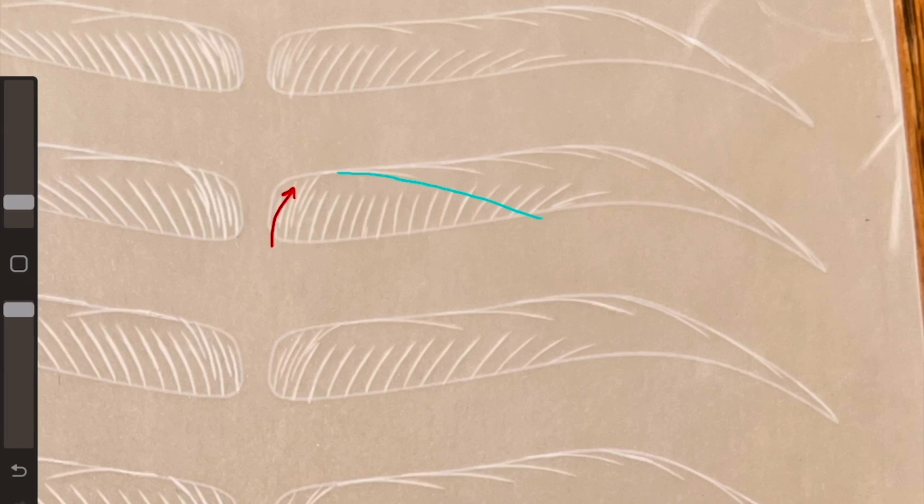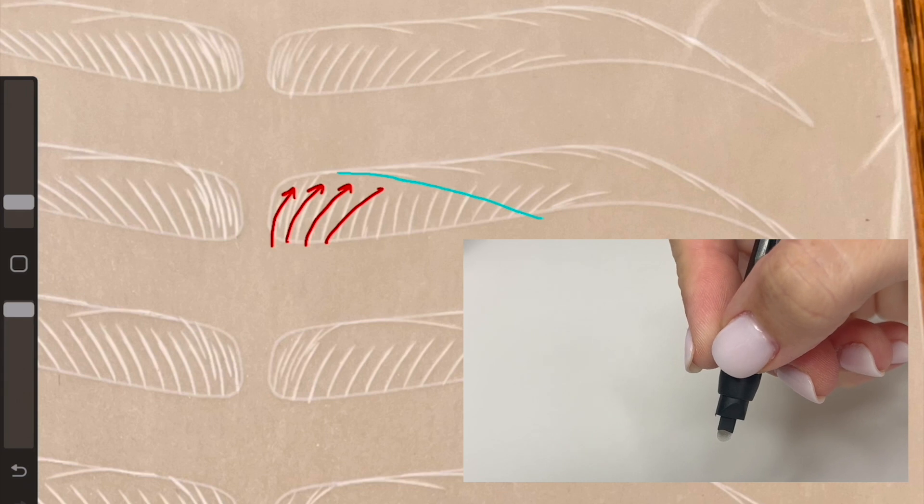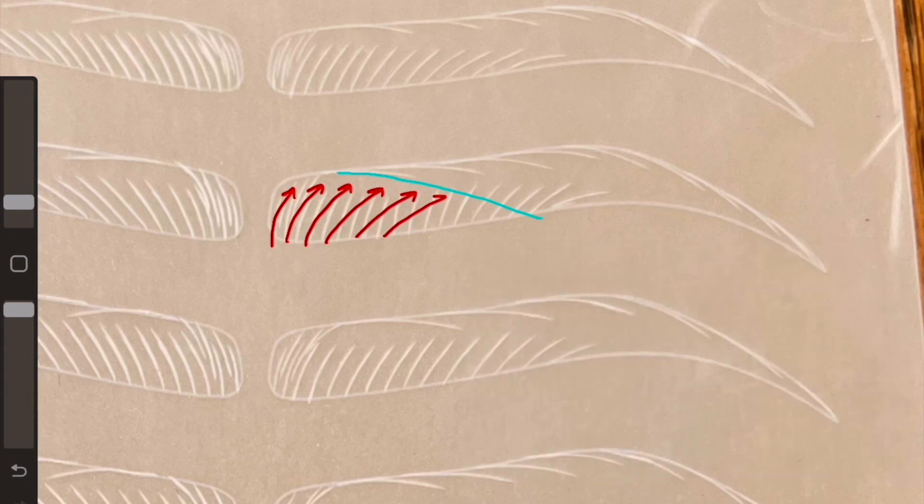Instead use the spine as your guide and with each stroke change the direction of your blade slightly so that your blade is pointing toward the spine before you make the stroke instead of straight up. It will be easier to create a clean stroke that properly represents the direction of hair growth without having to force it with an over curved stroke.